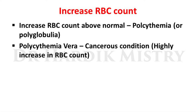Increase in RBC count above normal values — the condition is known as polycythemia or polyglobulia. Polycythemia vera is a cancerous condition in which there will be a highly increased RBC count. The most important thing here is that an increase in hemoglobin concentration will never happen in this condition.